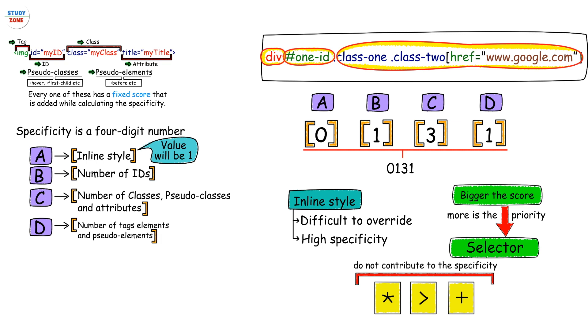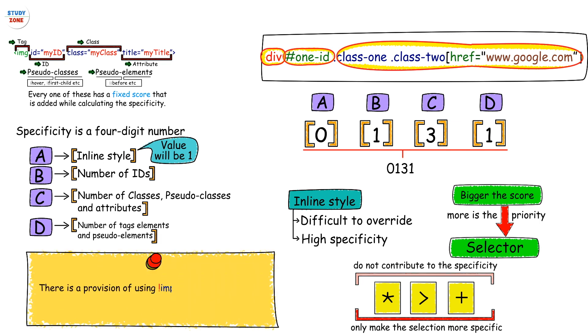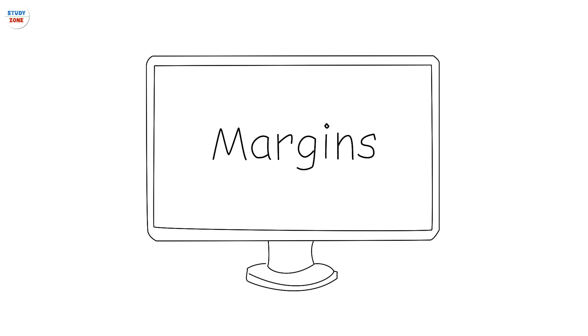The selectors like star, plus do not contribute to the specificity. These selectors only make the selection more specific. Important tip: there is a provision of using !important with the style to override inline styles, but this is another bad approach to override a bad approach. That's it from this video. In the next video we are going to talk about margins.